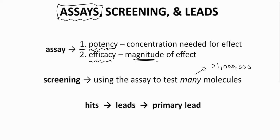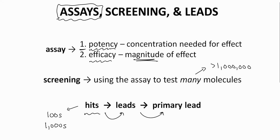The most promising compounds are called hits. A screening campaign may give hundreds or even thousands of hits. The very best hits will be promoted to lead status. A program may have multiple leads, but normally just one will be promoted to the status of primary lead and advance for further research. The other leads will be held in reserve as needed.